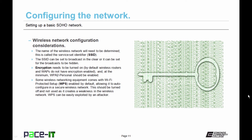Some wireless networking equipment comes with Wi-Fi Protected Setup — WPS — and it's enabled by default. This allows for the auto-configuration of wireless equipment in a secure wireless network. Sounds great, but this should be turned off and not used, as it creates a weakness in the wireless network. It's easily hacked. Because WPS can be easily exploited by an attacker, don't use it.